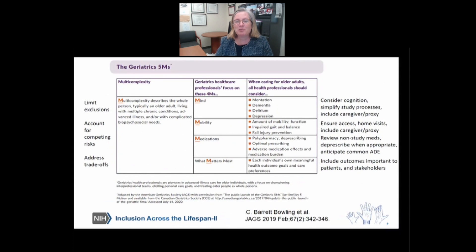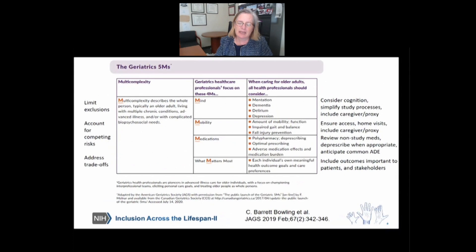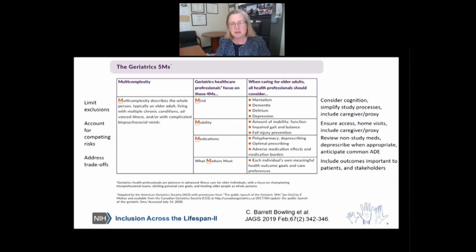Now I'm going to shift and talk a bit about the 5Ms, on which the 5Ts I just shared with you were based. This slide is taken from the American Geriatrics Society website. The 5Ms are: multi-complexity, which describes the whole person — typically an older adult living with multiple chronic conditions, advanced illness, and complicated problems with potential biopsychosocial needs. When we care for this population, we need to be focusing on the four Ms. For mind, we need to be thinking about mentation, dementia, delirium, and depression. For mobility, the degree of people's function, their balance, their gait, and how to prevent falls. For medications, thinking about the number of medicines and optimal prescribing and deprescribing. And thinking about what matters most to the patients in front of us, which means focusing on the individual's own meaningful goals and care preferences.